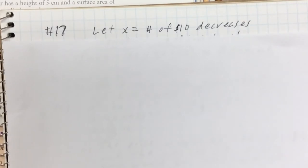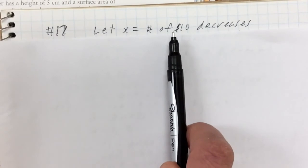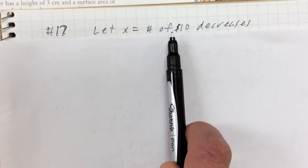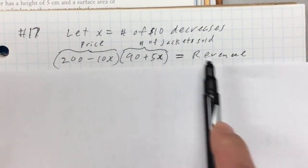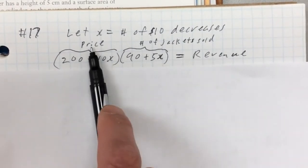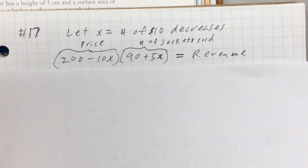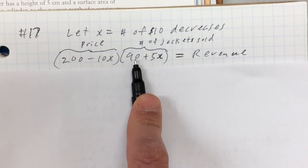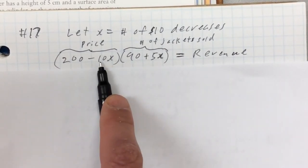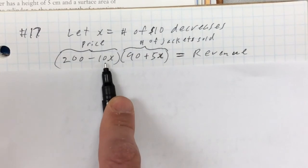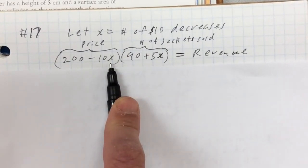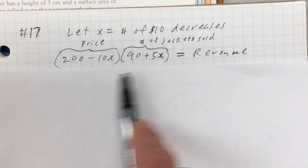Let X equal the number of $10 decreases. If X is 1, the price drops by $10; if X is 2, the price drops by $20. The price expression is (200 − 10X) and the number of jackets is (90 + 5X). Revenue equals price times number of jackets. At the original price, 200 × 90 = $18,000 revenue. Each $10 drop increases jackets by 5, so the revenue equation is (200 − 10X)(90 + 5X) = 17,600.